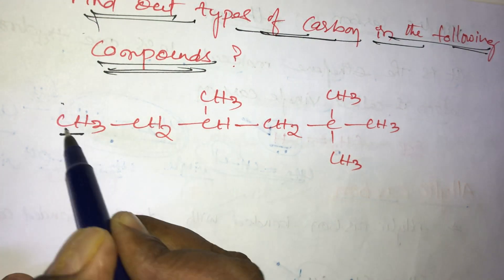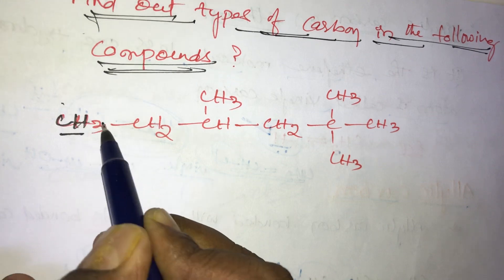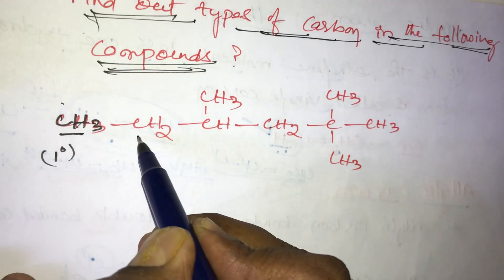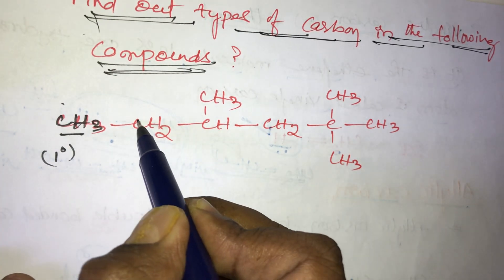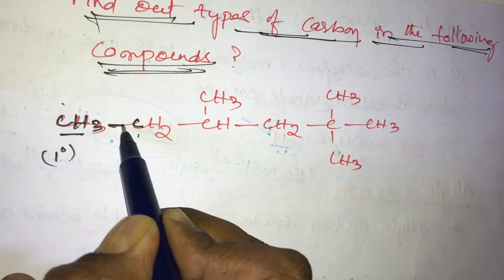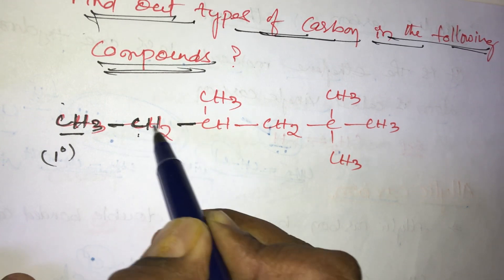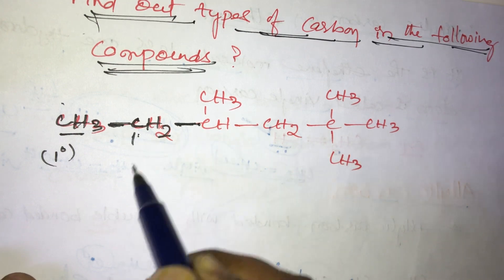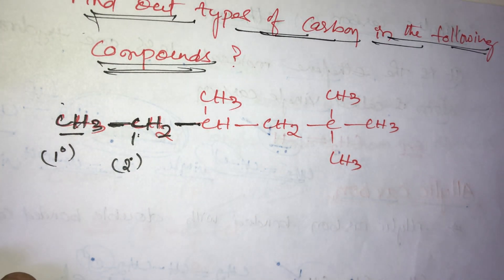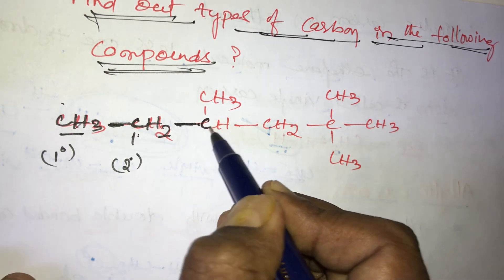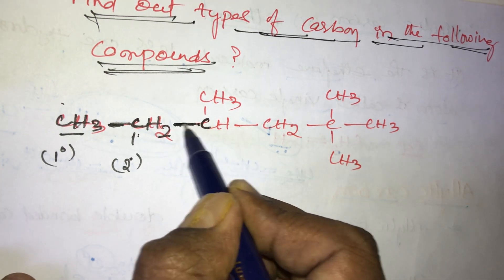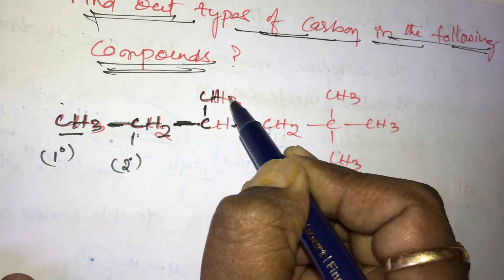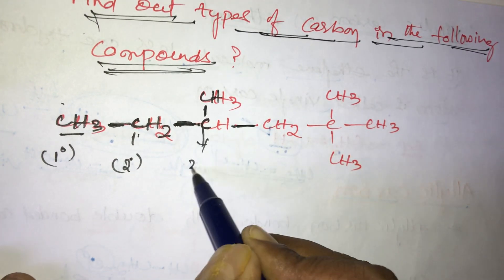This CH3 carbon is attached to only the right side carbon, so it is a primary carbon. This CH2 is attached to the left side carbon and the right side carbon, so it is a secondary carbon. This carbon is bonded with the left side, right side, and upper side.